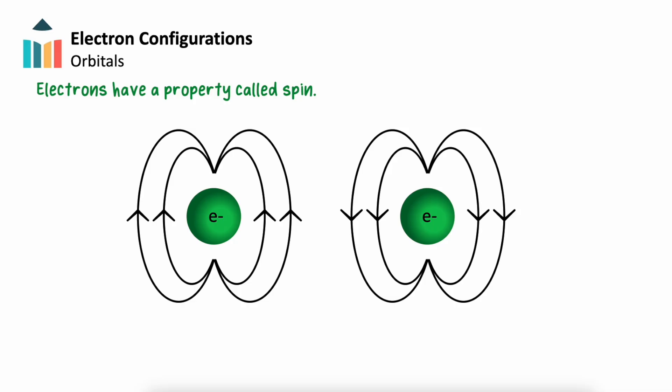Part of the behavior of an electron comes from a property called spin. This is a property with no macroscopic analog, meaning the electrons are not actually spinning. Rather, spin is used as a way to help describe an electron's angular momentum. Electrons can have an up or down spin, which we will represent using arrows.